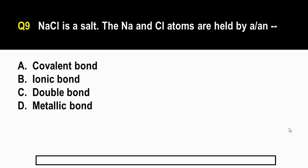Let's go now to question number nine. NaCl or sodium chloride is a salt. The sodium and chlorine atoms are held by A. A covalent bond, B. An ionic bond, C. A double bond, and letter D. A metallic bond.